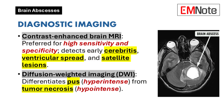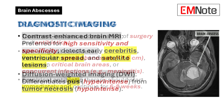Contrast-enhanced brain MRI is the preferred imaging modality due to its high sensitivity and specificity. It can detect early cerebritis, the spread of infection into the ventricles and subarachnoid space, and satellite lesions. On T1-weighted MRI sequences, a hypointense lesion surrounded by an iso-intense or slightly hyperintense halo is observed with contrast enhancement in the halo. On T2-weighted FLAIR sequences, perilesional edema appears hyperintense, and the capsule appears as a hypointense halo due to paramagnetic oxygen. Diffusion-weighted imaging (DWI) can differentiate pus in a brain abscess from cell debris and tumor necrosis, with pus appearing hyperintense due to restricted water molecule movement.